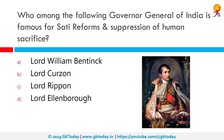Which Governor General of India is famous for Sati reforms and suppression of human sacrifice? That was Lord William Bentinck. He was the first Governor General of British India. He tried to suppress Sati — the prescribed death of a widow on her husband's funeral pyre — and passed the Bengal Sati Regulation 1829. He also targeted other customs with the help of Raja Ram Mohan Roy, known as the maker of modern India.